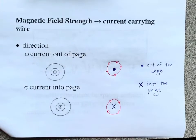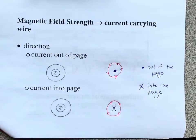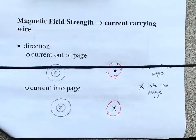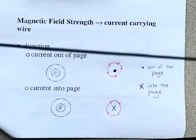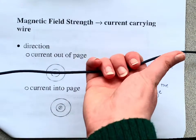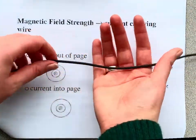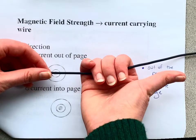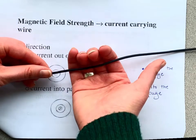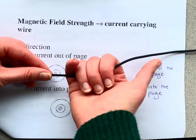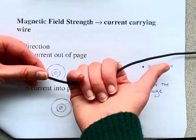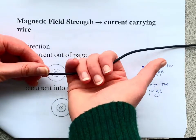This first hand rule is only used with a current-carrying wire. For example, if the current was going to the right through this wire, the magnetic field would be curling around it — going into the page here, behind it, then out of the page there, then in front of it towards us. It's going around and around like that.